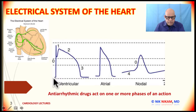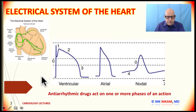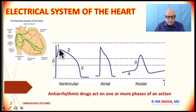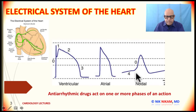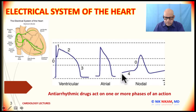Here is the action potential of the actual ventricular myocyte. We have the resting membrane potential, and once the impulse reaches from the Purkinje fibers it is activated. Then we have phase 0, which is the depolarization of the ventricle, and that is followed by phase 1, phase 2, and phase 3.